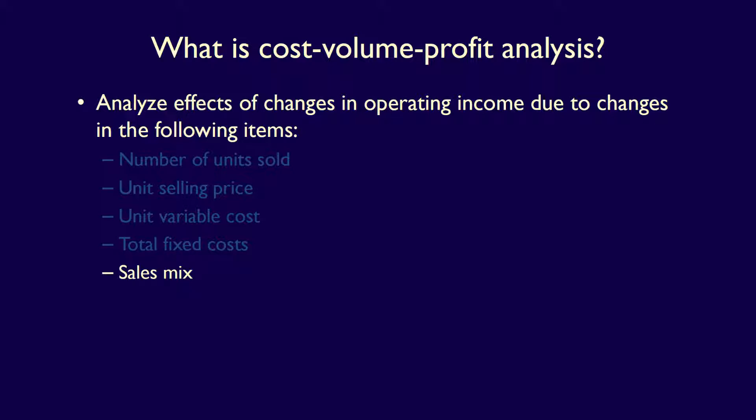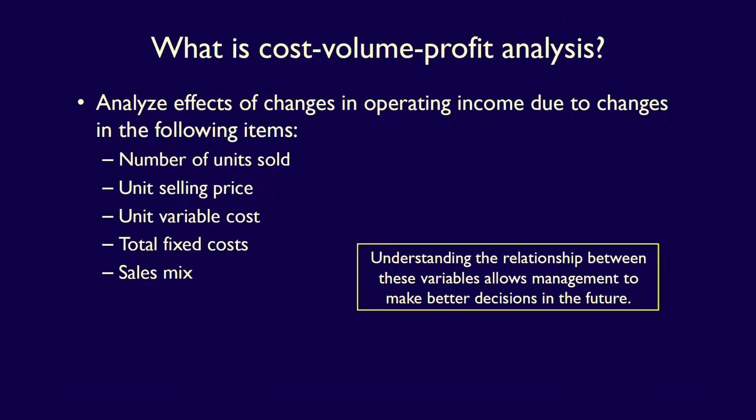Sales mix is the combination of products that make up total sales. For example, 70% of a company's sales may be made up of lawn mower sales and 30% replacement blades. Sales mix is the term used with regards to the percentage of total sales that each product represents. By understanding the interrelationship of these factors, management is able to make better decisions with regards to future uncertainties.